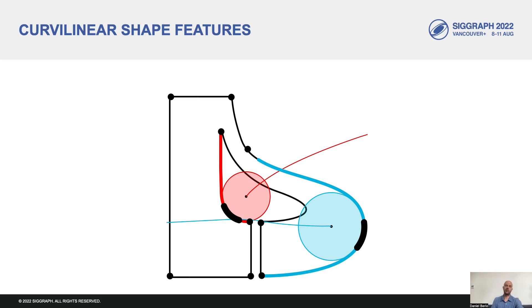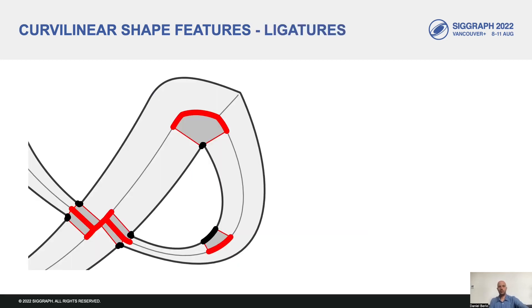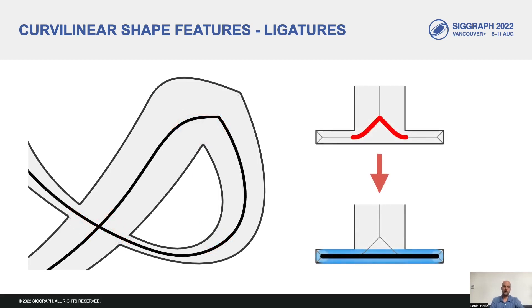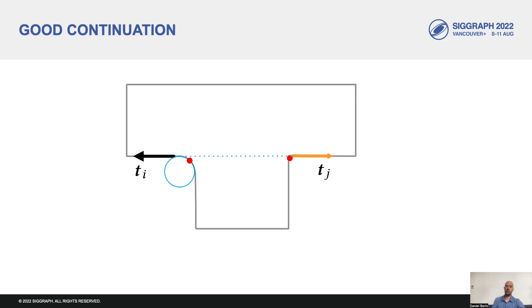CSFs capture concavities and convexities along the outline, while also facilitating the computation of features that are useful for stroke segmentation. For example, the interior skeletal segments that are symmetric to the contact region of a concave CSF give us ligatures — regions that are indicative of perceptually distinct parts and will eventually need adjustment when reconstructing strokes. The CSF support segments facilitate the computation of tangents near concavities, which we then use to compute a measure of good continuation along disjoint outline segments.